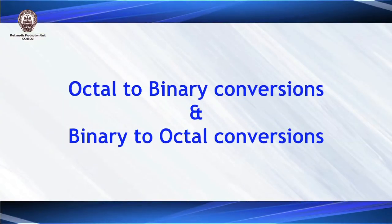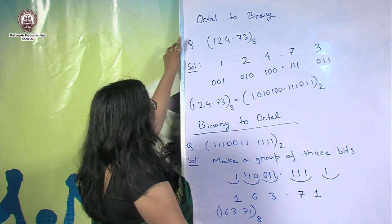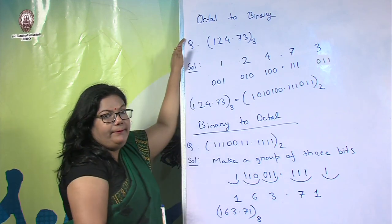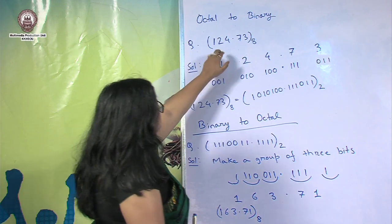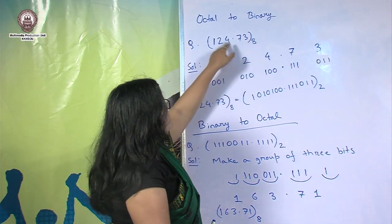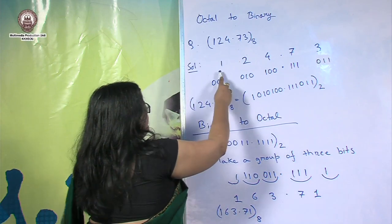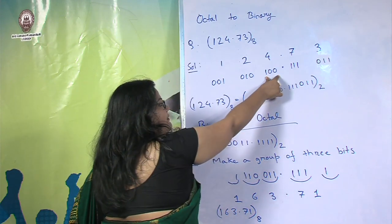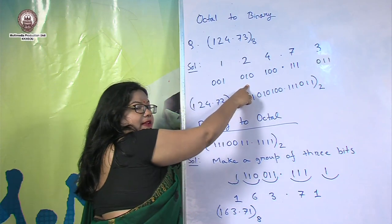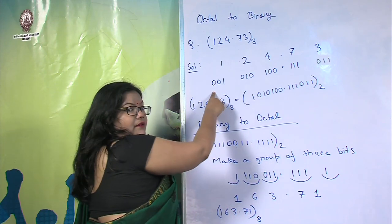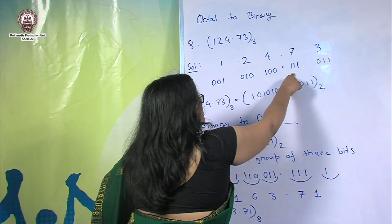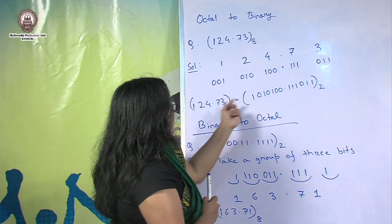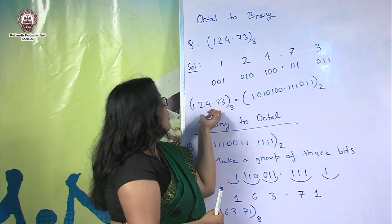Now let us look at octal to binary and binary to octal conversions. Octal to binary conversion is very simple: we represent each digit of the octal number by its 3-bit binary equivalent. For example, with the octal number 124.73: 4 is 100, 2 is 010, 1 is 001, 7 is 111, and 3 is 011. Combining these gives the binary equivalent.